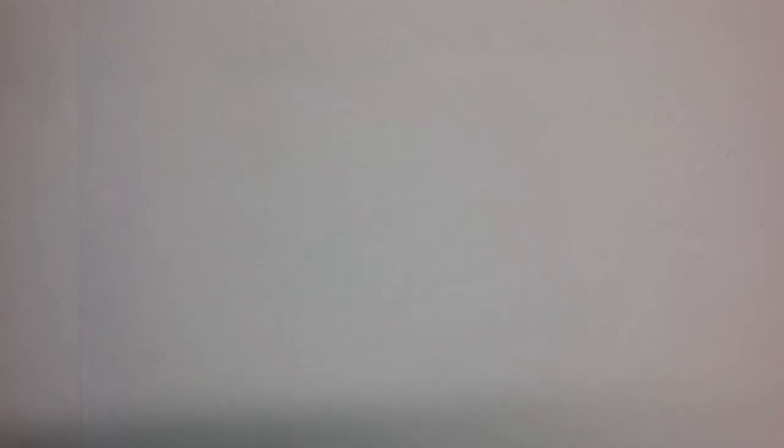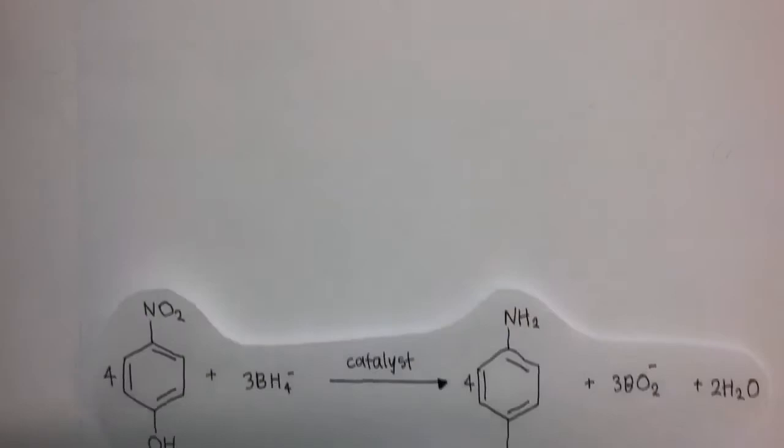But why did we bother figuring this out? The reduction of compounds like 4-nitrophenol to produce anilines is industrially important because they are widely used in the chemical industry. They are used to make polyurethane foam, Kevlar, and many medications.